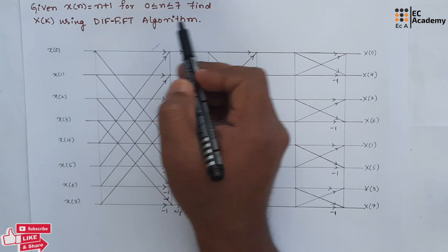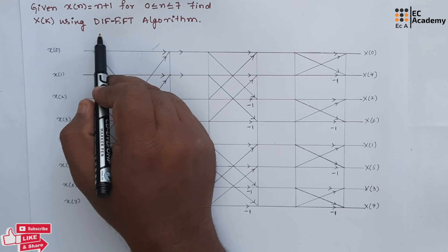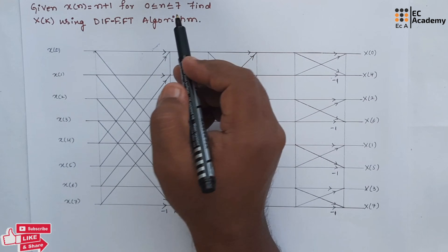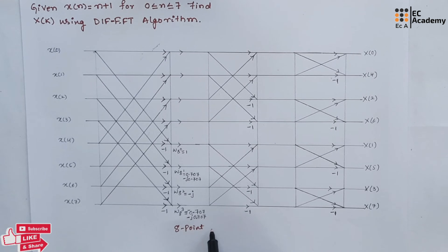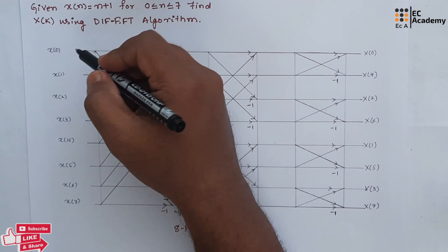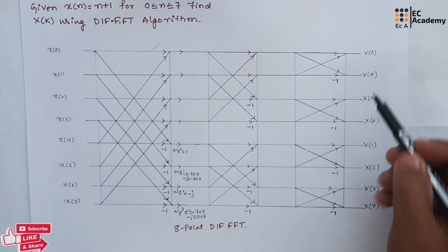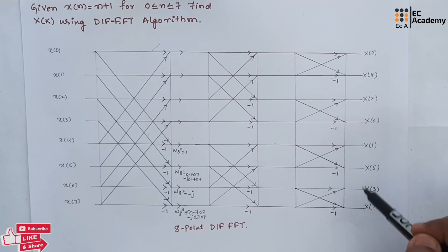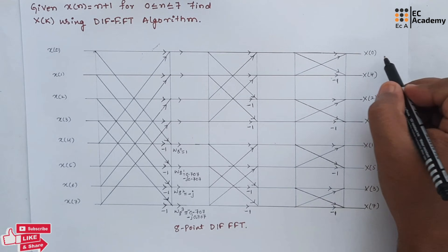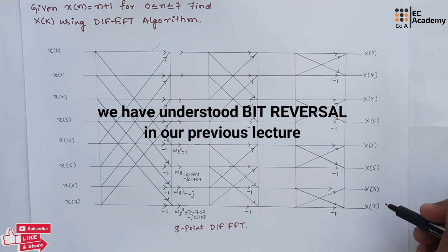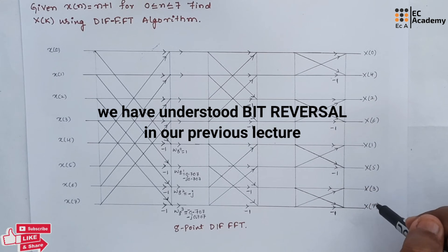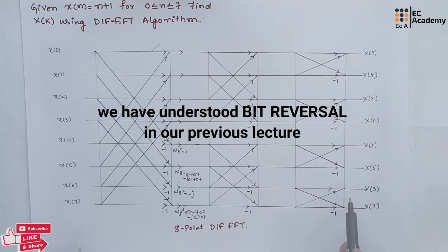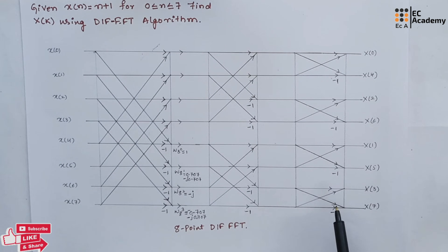Here x of n is given. We need to find x of k using decimation in frequency fast Fourier transform. This is the signal flow graph to find 8-point DIF FFT. If you observe here, the input sequence is in order and the output sequence is decimated — that is why we call this decimation in frequency. To write these values, you can use the bit reversal procedure, or if you can remember these values, you can directly write them. Before solving the problem, you need to draw this signal flow graph.